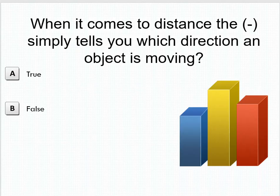When it comes to distance, the negative simply tells you which direction an object is moving. Be ready to answer that. Is that true or false?